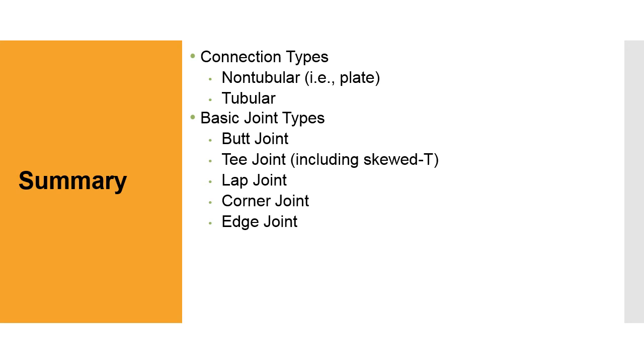Summary: we covered connection types, non-tubular and tubular; basic joint types, butt joints, T joints, lap joints, corner joints, and edge joints.